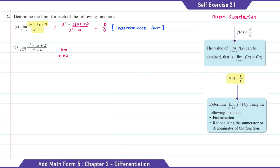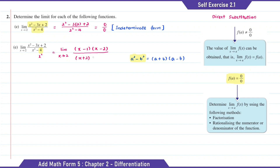To find the limit value, here we need to factorize the numerator and also the denominator. For the numerator part, when we factorize it, it will be (x minus 1)(x minus 2). As for the denominator, we can write 4 as 2 squared, and using a squared minus b squared, the factorization of x squared minus 2 squared will be (x plus 2)(x minus 2).